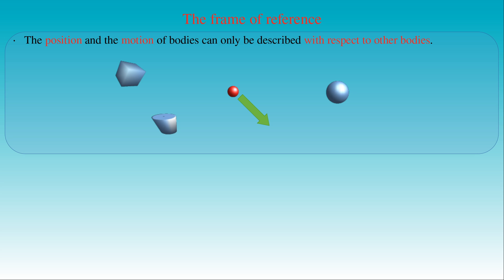When the ball is moving, it is changing its position compared to those of the other bodies, and this motion can only be described with respect to them or to another arbitrary group of bodies. That means the motion is always relative.